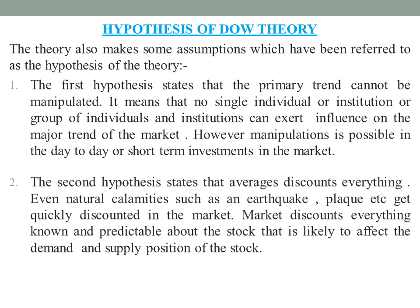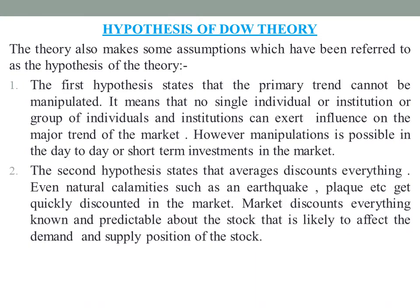The second hypothesis states that the average discounts everything. Even natural calamities such as an earthquake or plague get quickly discounted in the market. The market discounts everything known and predictable about the stock that is likely to affect the demand and supply position of the stock.